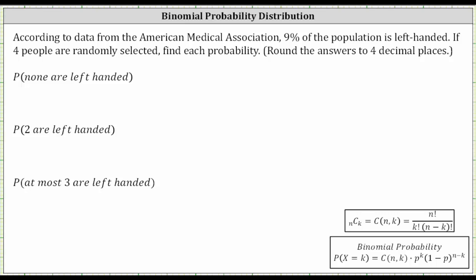According to data from the American Medical Association, 9% of the population is left-handed. If four people are randomly selected, find each probability. We're told to round the answers to four decimal places.